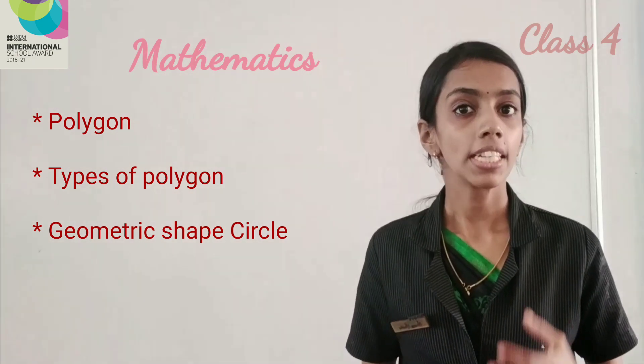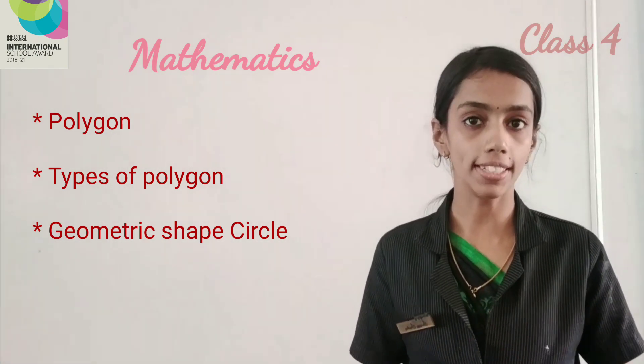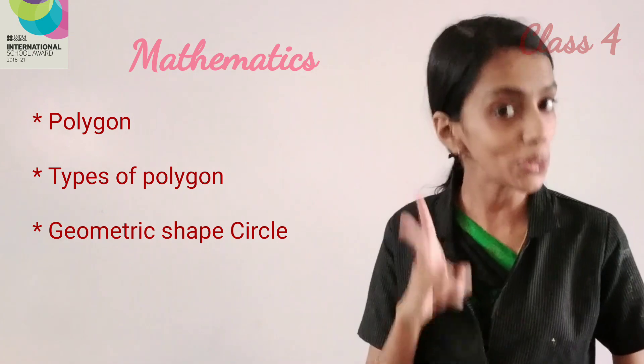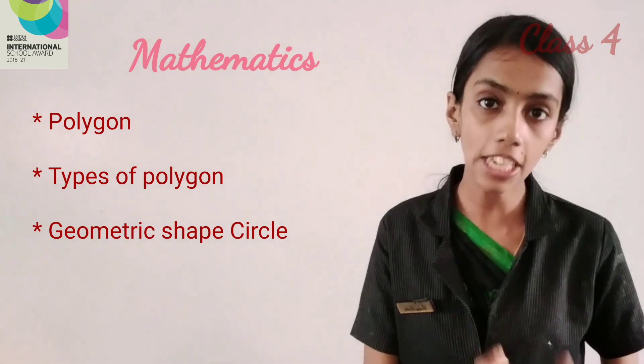All the closed shapes that are made up of straight lines are called polygons. There are two types of polygons: regular polygons and irregular polygons.